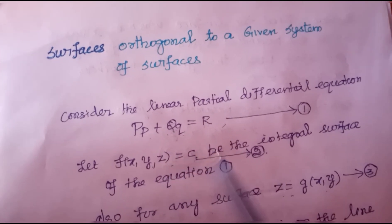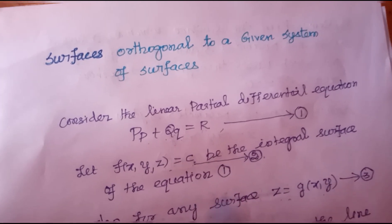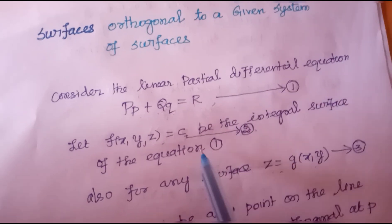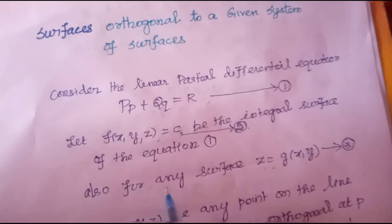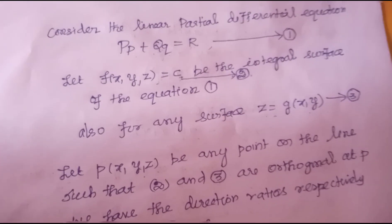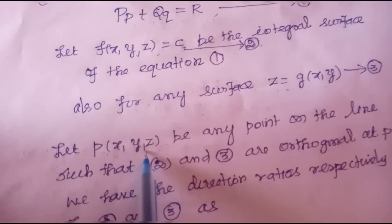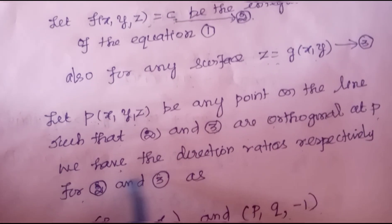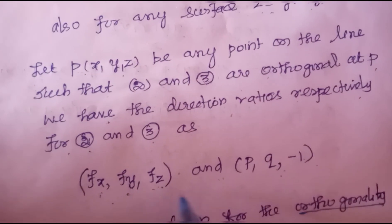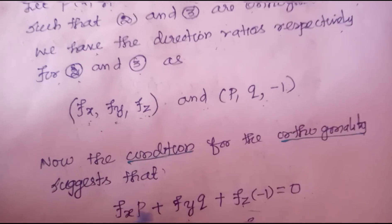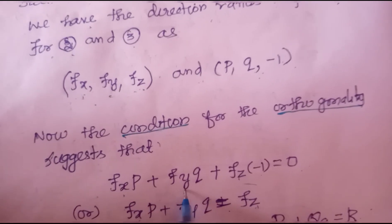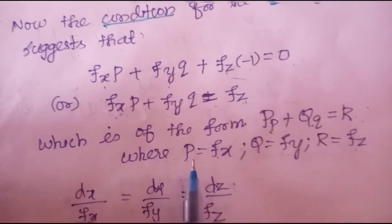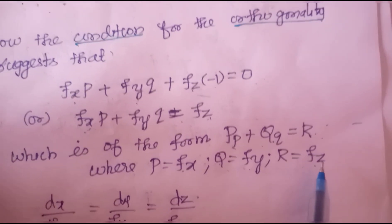In Lagrange's equation PP + QQ = R, we solve by forming the auxiliary equation using the grouping method or multiplier method, and find the general solution. Let f(x, y, z) = c be the integral surface of equation 1. For any surface z = g(x, y), the direction ratios of equations 2 and 3 are (fx, fy, fz) and (p, q, -1) respectively. The orthogonality condition gives: fx·p + fy·q + fz·(-1) = 0, that is fx·p + fy·q = fz, which is of the form PP + QQ = R, where P = fx, Q = fy, R = fz.